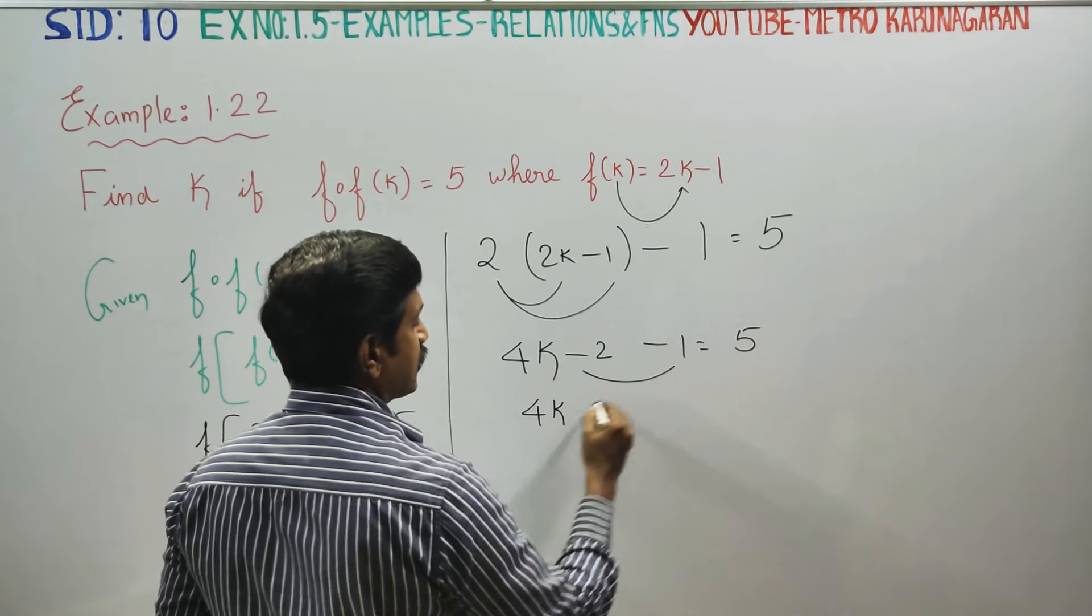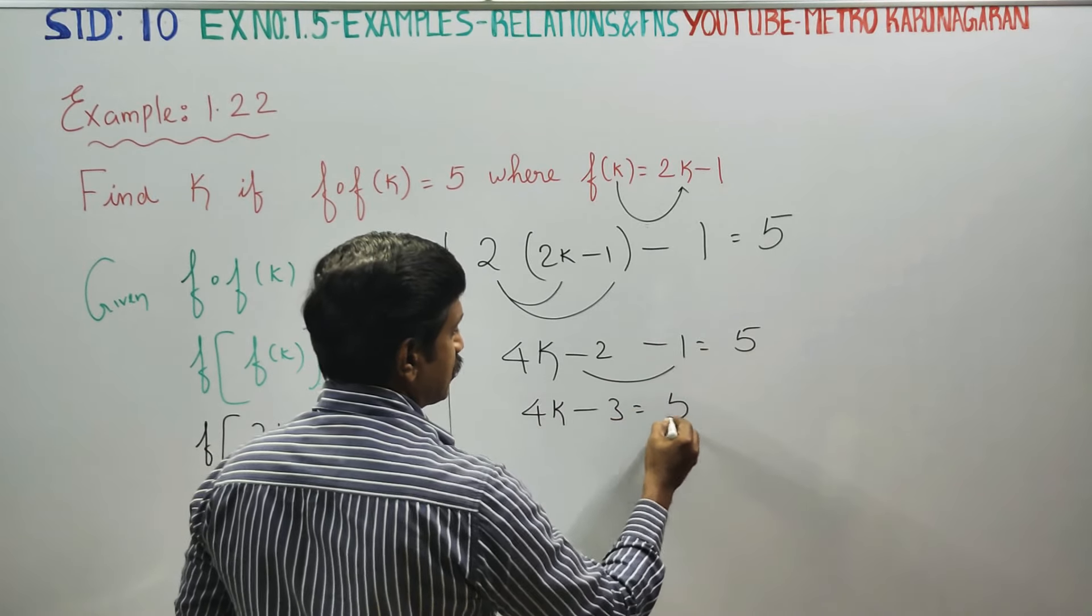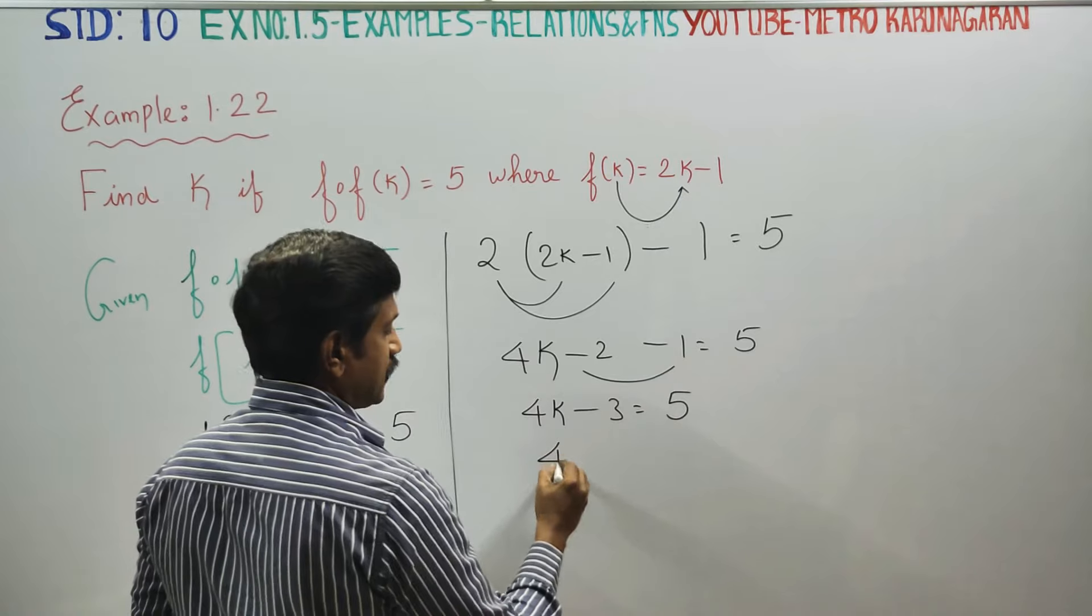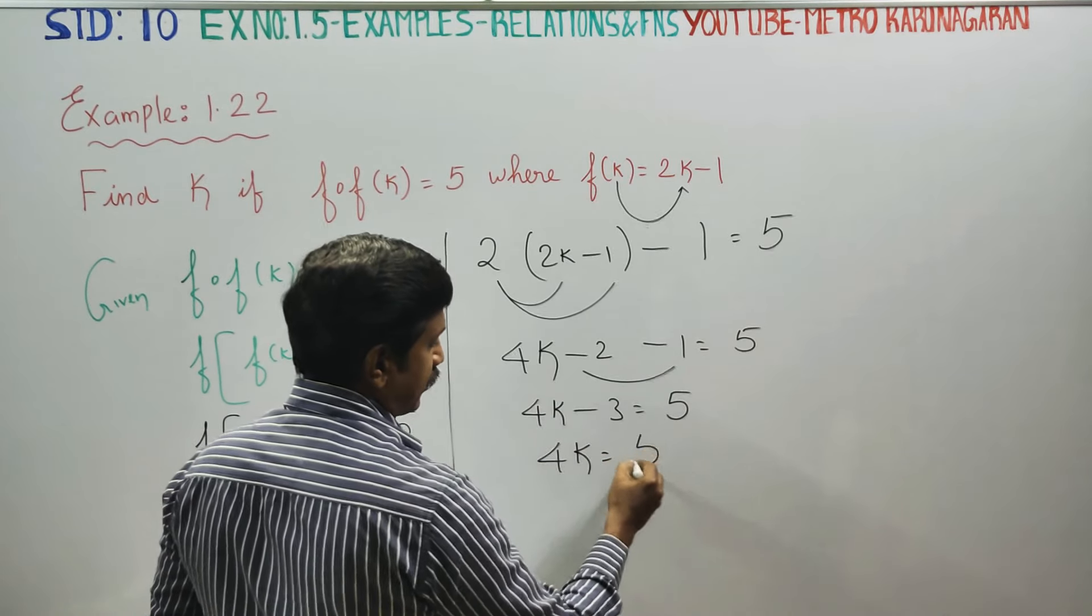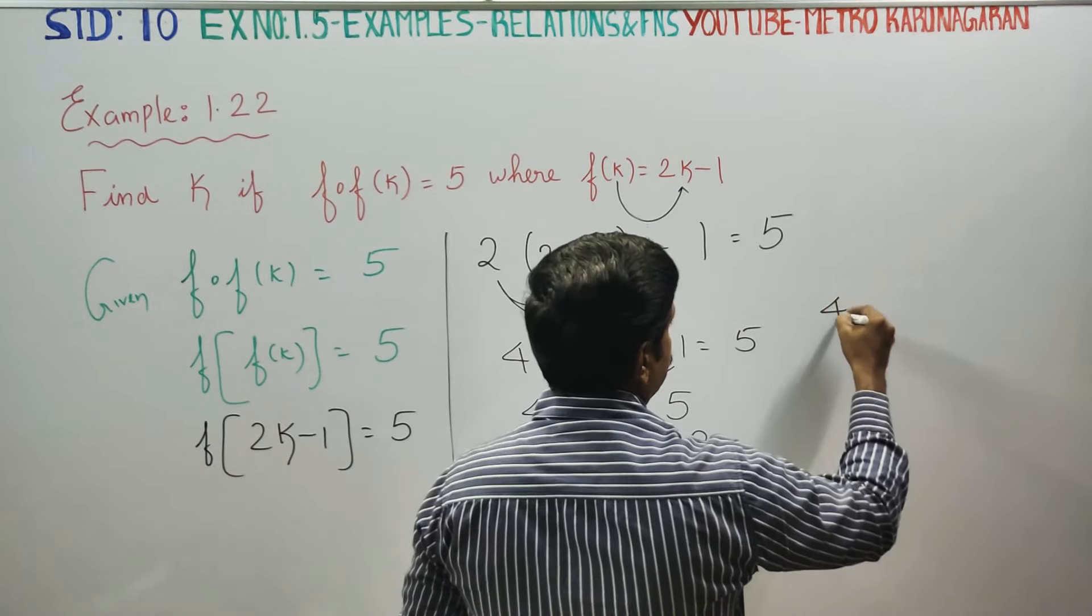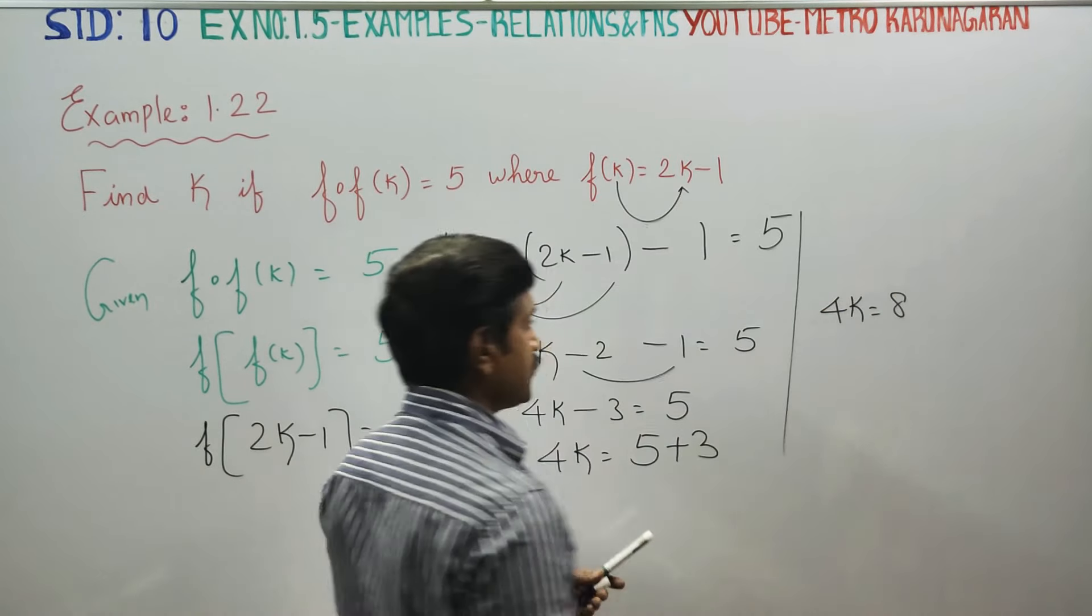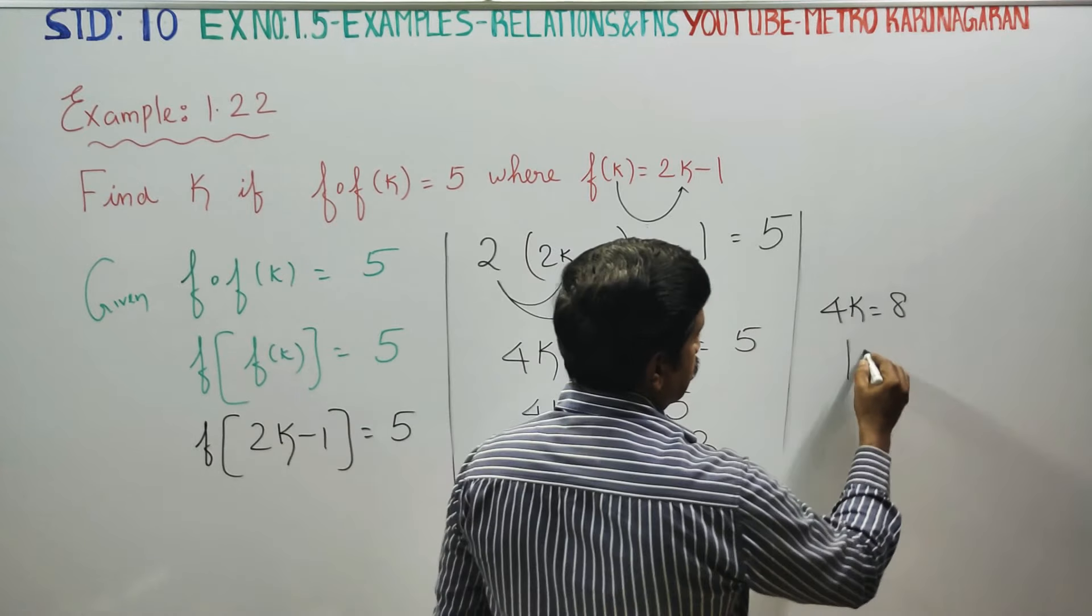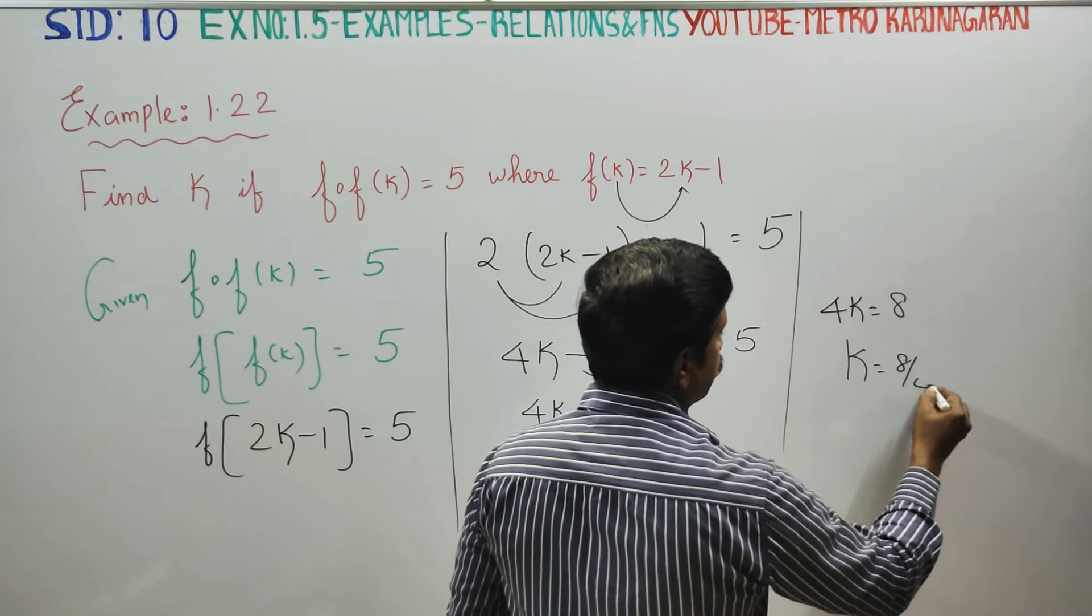4k minus 3 is equal to 5. Adding 3 to both sides, 4k is equal to 8. 5 plus 3 is 8. Therefore k is equal to 8 by 4.